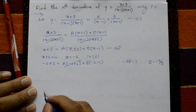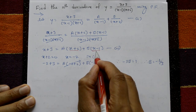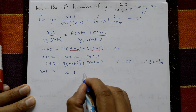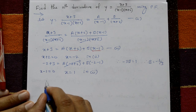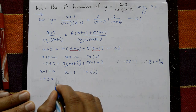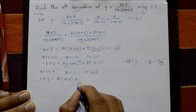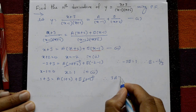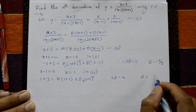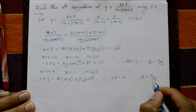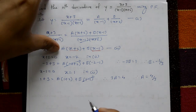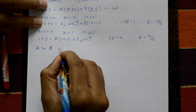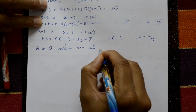Therefore B = -1/3. Now take x-1 = 0, so x = 1. Put x = 1 in equation number 2: 1+3 = A(1+2) + B(1-1). The B term is 0, so 3A = 4, therefore A = 4/3.